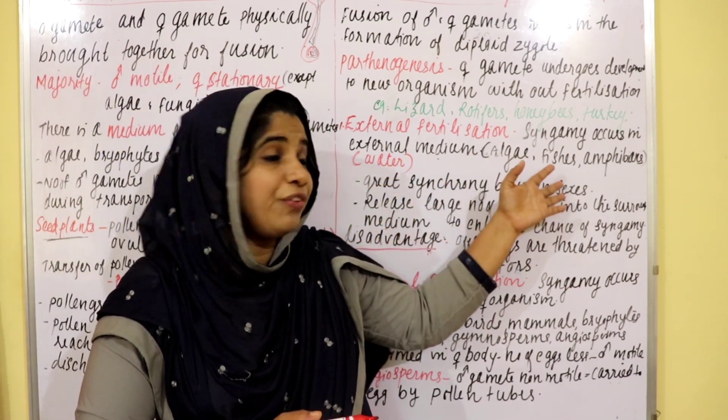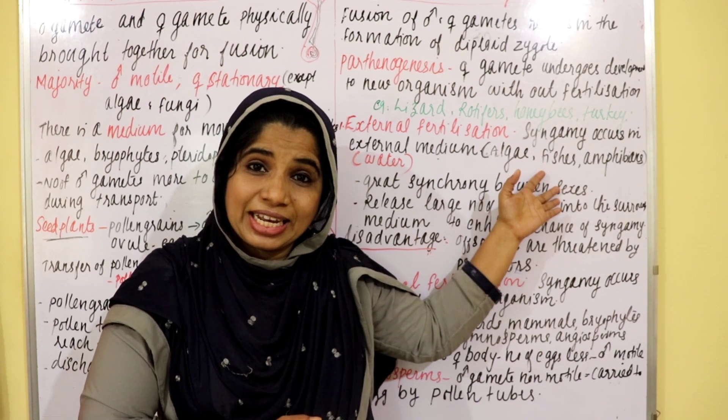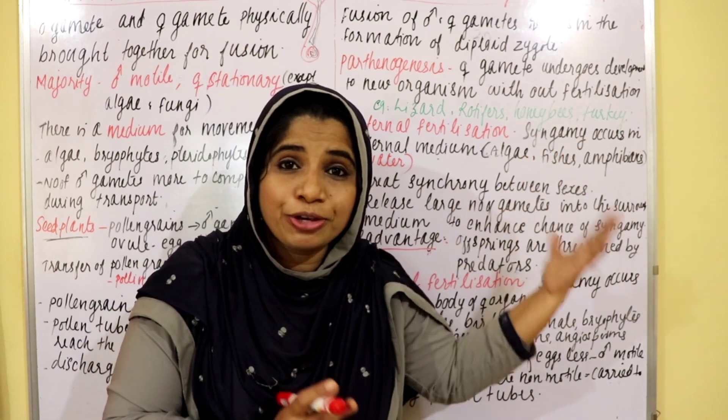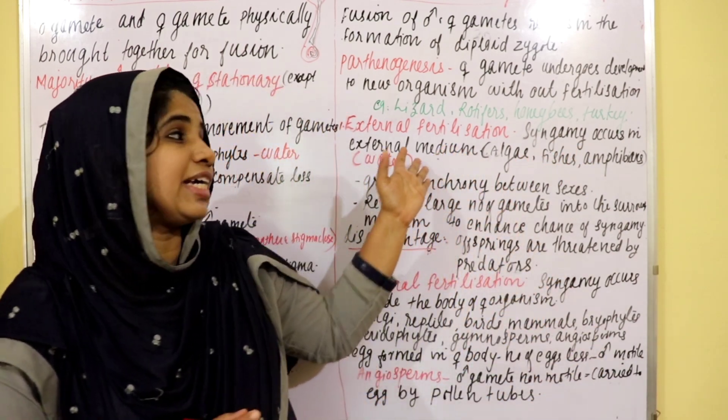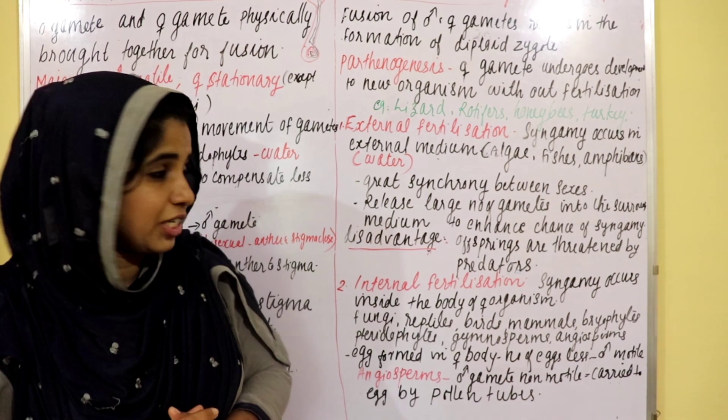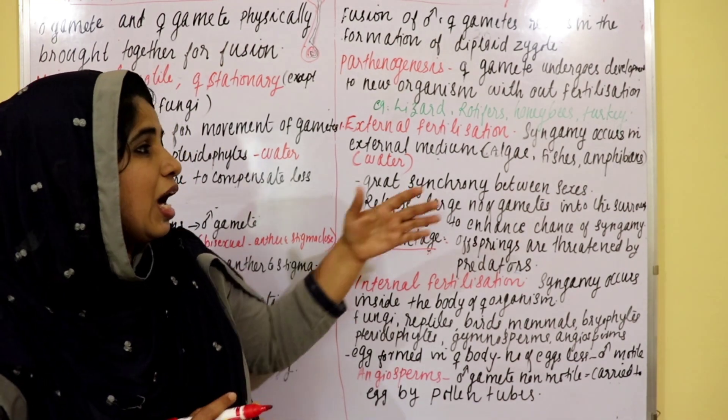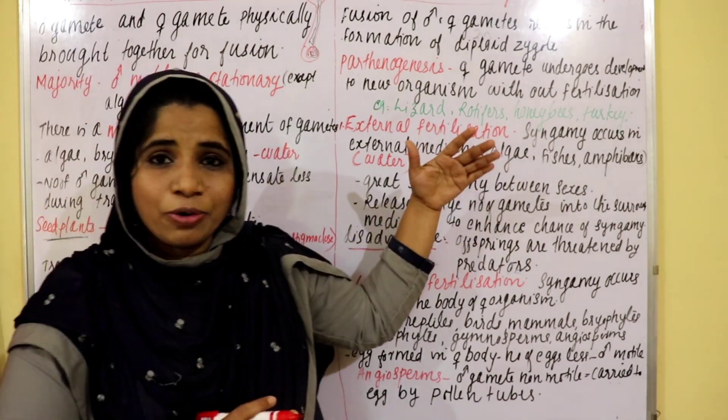Examples of organisms with external fertilization include algae, fish, and amphibians.